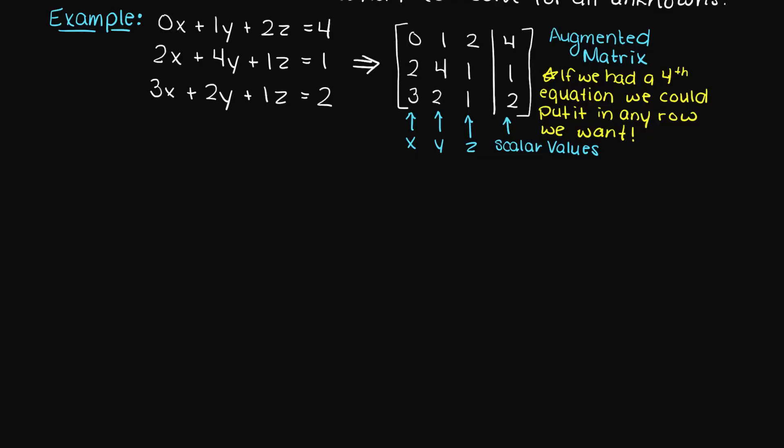We are allowed to switch the position of one linear equation with another as it is not changing anything. Since the x value in the first row linear equation is zero, it makes sense to swap this with either row two or three to save ourselves an extra step.